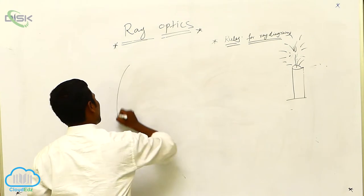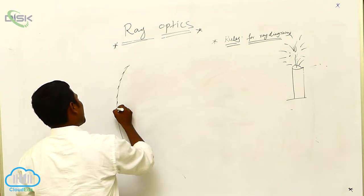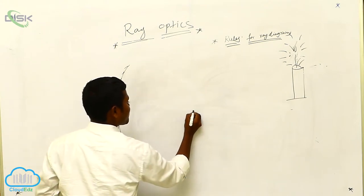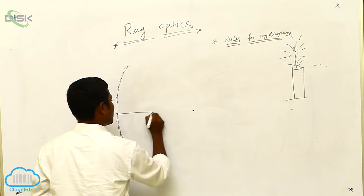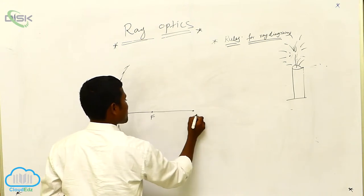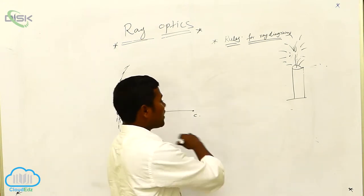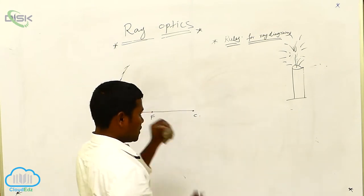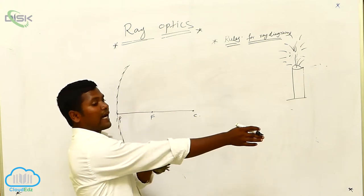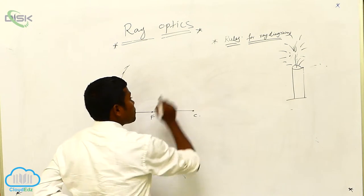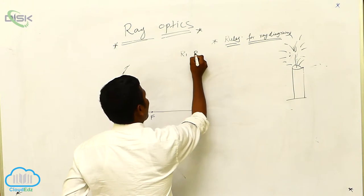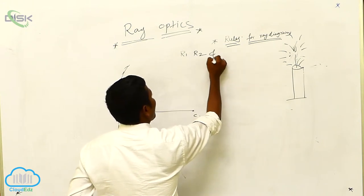Now I am considering a concave mirror — how the image is forming on the concave mirror. The concave mirror has a center point called the pole. A line passing through it is called the principal axis. There is a midpoint called the focus, and there is the center of curvature and the pole. In front of this mirror I am considering an object — that may be a candle, light, or sunlight. From that, I am considering rays. In general, we can say there are three types of rays we can consider: R1 ray, R2 ray, and R3 ray.